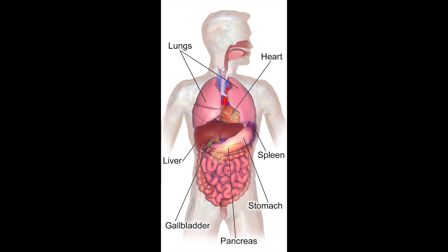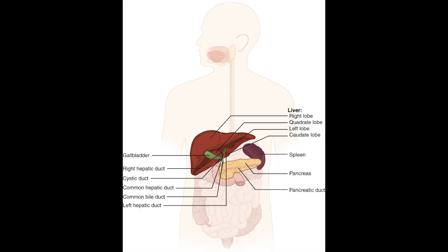The three main tissues in the stomach are muscular tissue, which churns the stomach contents, and glandular tissue, which produces digestive juices.